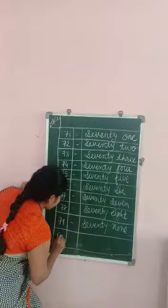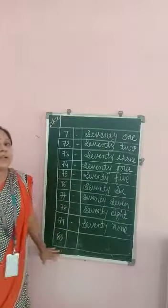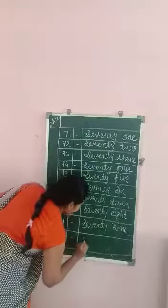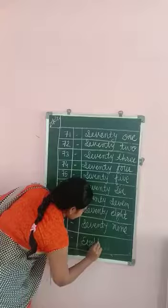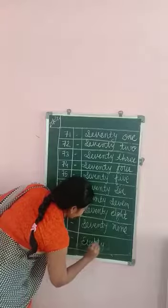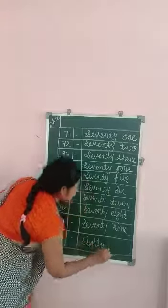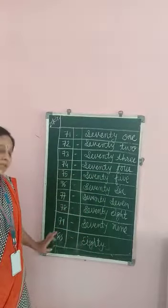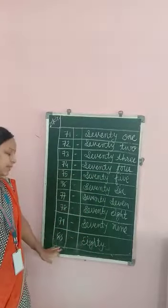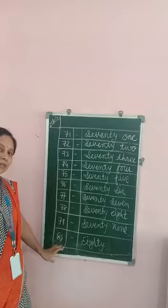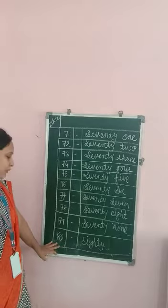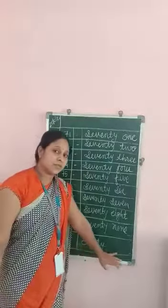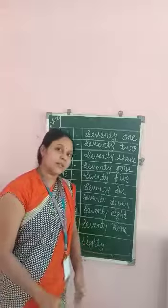After 79 — 80. E, I, G, H, T, Y — eighty. After 79, 80. What is the spelling of 80? E, I, G, H, T, Y — 80.